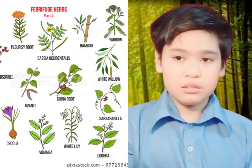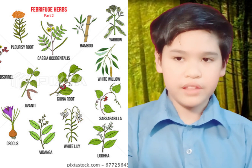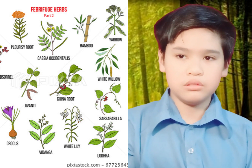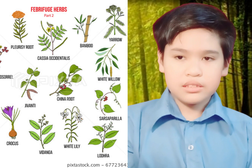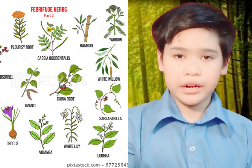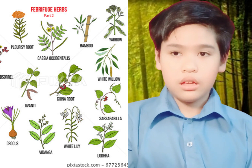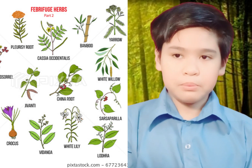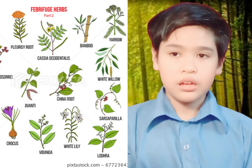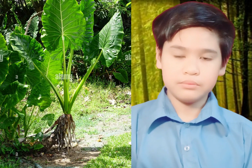Herbs are small plants that have soft, flexible, and juicy stems. Their stems are not covered with bark. Examples of herbs: banana tree, water lily, gabi, cactus.